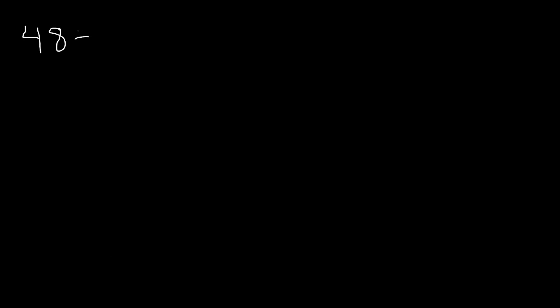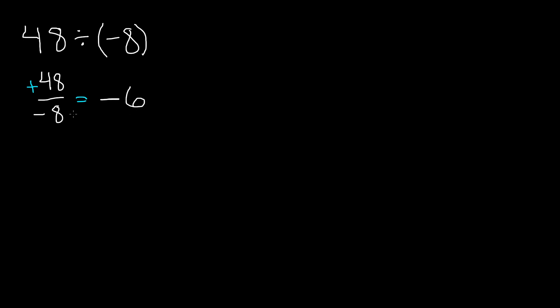Now let's do another problem. We have 48 divided by negative 8. We're dividing a positive by a negative, so in fraction form: positive 48 over negative 8. Remember, whenever you see a number without a sign in front of it, it's always going to be a positive number. We're dividing two integers with different signs, so we'll get a negative quotient. 48 divided by 8 gives us 6, so our quotient is negative 6.